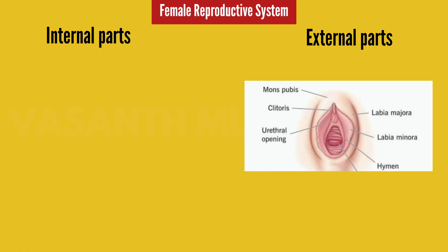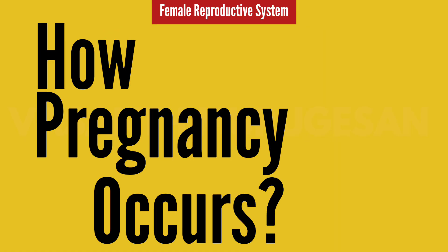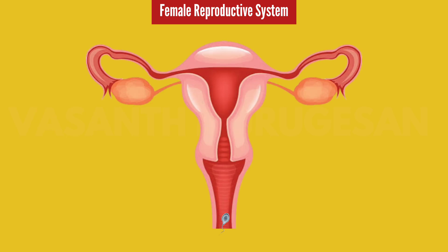Next, the pregnancy process is as follows. Sperm will enter the female reproductive system through the external part. Then the sperm will pass through the uterus to reach the fallopian tube. The fallopian tube is the site of conception, or the site of fertilization, where the egg cell and sperm meet. The fertilized egg then reaches the uterus for implantation, and that implantation is called pregnancy.